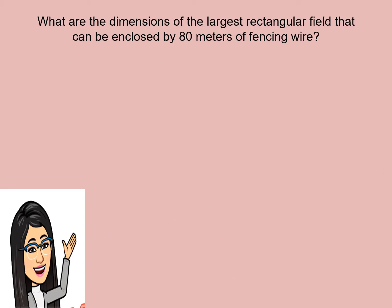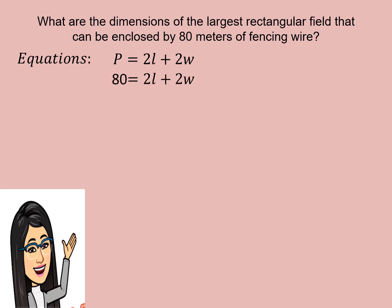Now let us form our equations. From the formula of the perimeter, which is 2L plus 2W, let us substitute 80 for the perimeter. Since all terms are divisible by 2, the equation is simplified to 40 is equal to L plus W. But we can solve L in terms of W, so L is equal to 40 minus W.